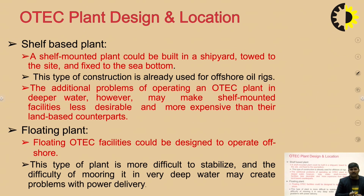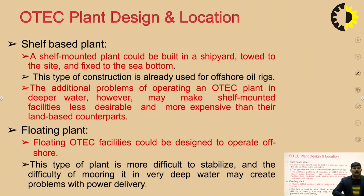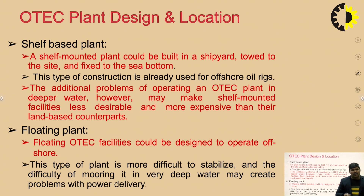The third location type is the floating plant. This plant floats on the water. A floating OTEC facility could be designed to operate offshore, but this type of plant is more difficult to stabilize, and the difficulty of mooring in very deep water may create problems with power delivery from one place to another.